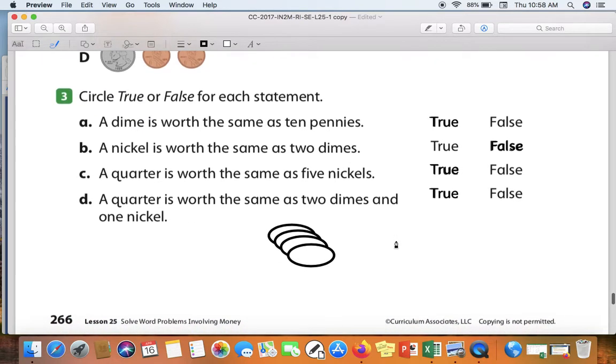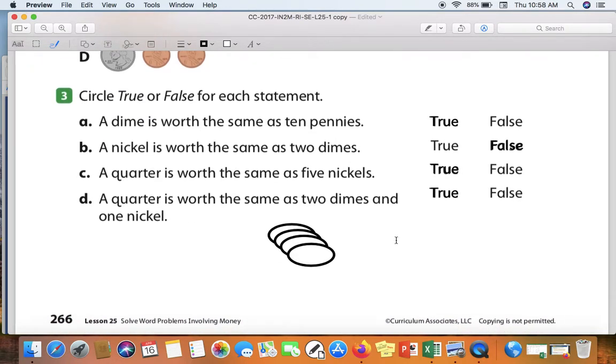Circle true or false for each statement. A dime is worth the same as ten pennies. Ten pennies. Each penny is worth one cent. So if I have ten of them, that means I have ten cents. A dime is also worth ten cents. So that means that that statement is true.